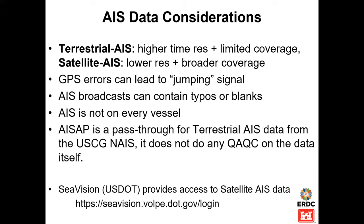For those new to AIS data, a few considerations: GPS errors can cause jumping signals, especially in urban areas or near grain elevators or large metal equipment. There can be typos or blanks in messages. AIS is not on every vessel, which can give a false negative about use — small vessels using navigation projects won't be visible. You have to find other ways to capture that information.